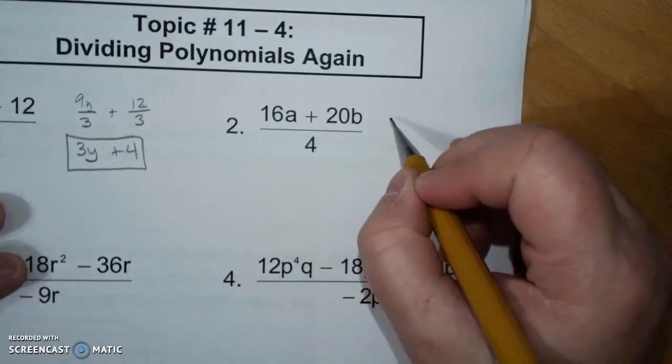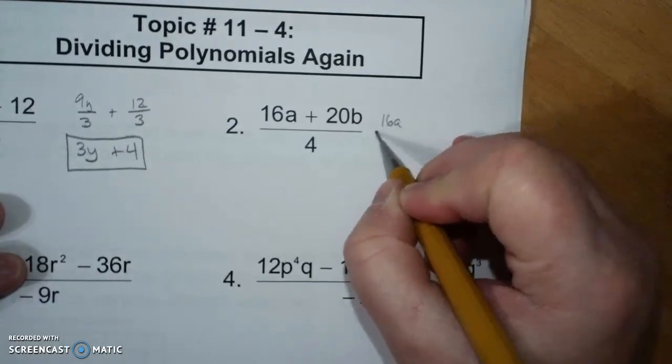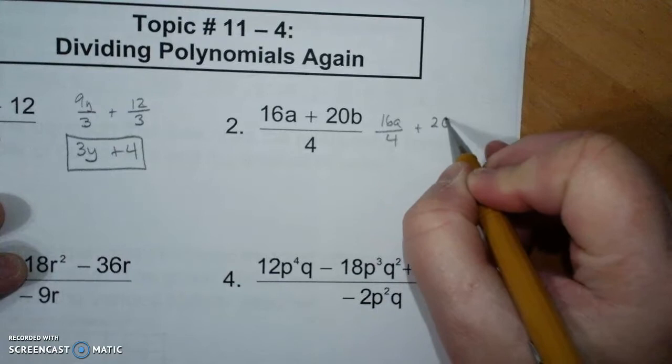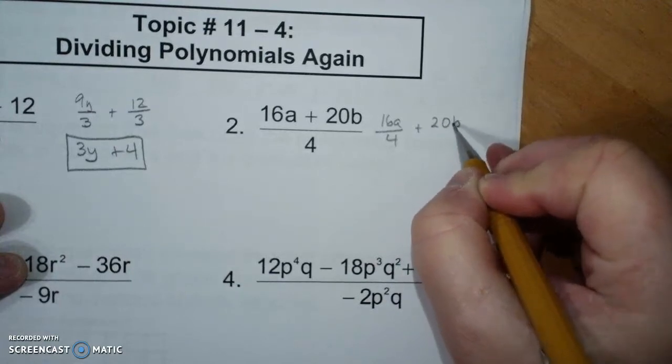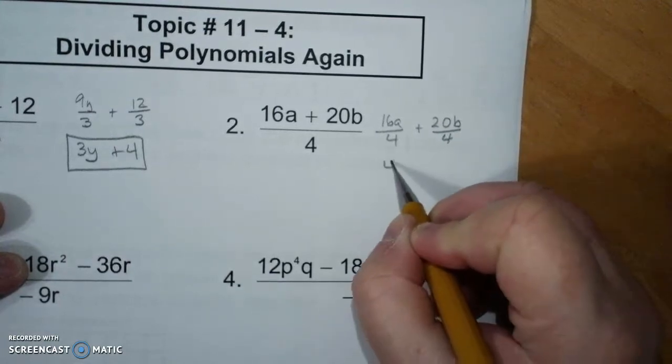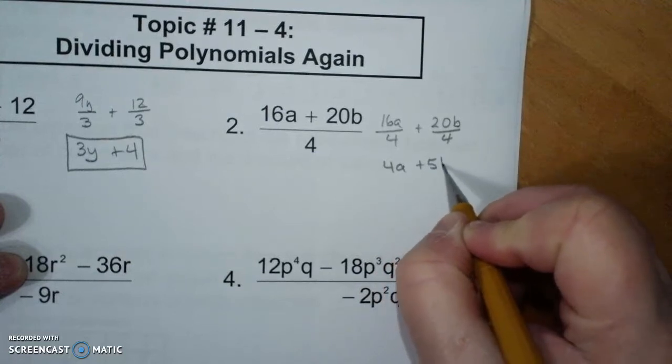So likewise, you're going to do 16a over 4 plus 20b over 4. That's 4a plus 5b.